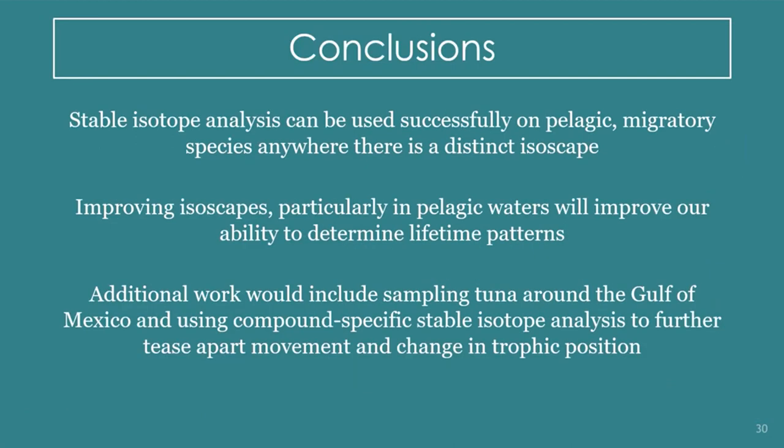To conclude: stable isotope analysis can be used successfully on pelagic migratory species anywhere that a distinct isoscape exists, and improving isoscapes — particularly in pelagic waters — will improve our ability to determine lifetime patterns. Additional work would include sampling tuna across the Gulf of Mexico and using compound-specific stable isotope analysis to further tease apart movement and changes in trophic position. Thank you.